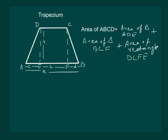We know that c plus b plus d will be equal to a. Then our area will be: area of triangle ade equals half times c times h; area of triangle bcf equals half times d times h; and area of the rectangle equals b times h.